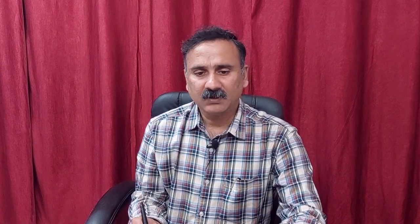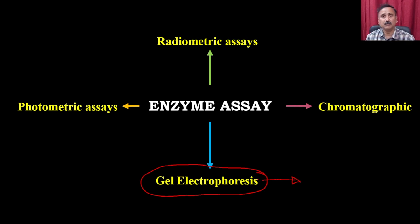In summary for radiometric assays, we discussed the different ways to set up radiometric assays and how to utilize the scintillation proximity assay-based system to measure enzyme activity without going through the tedious process of separating the substrate from the radiolabeled product. Let us now move on to another approach using gel electrophoresis, where you run the enzyme onto the electrophoresis or use electrophoresis to separate labeled substrate from non-labeled substrate, or labeled product from unlabeled product.